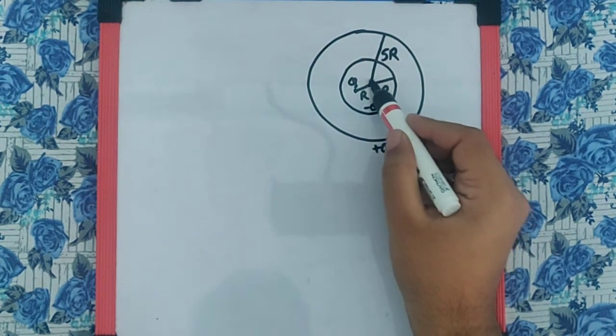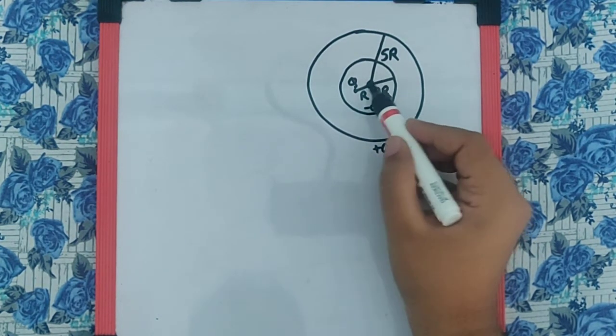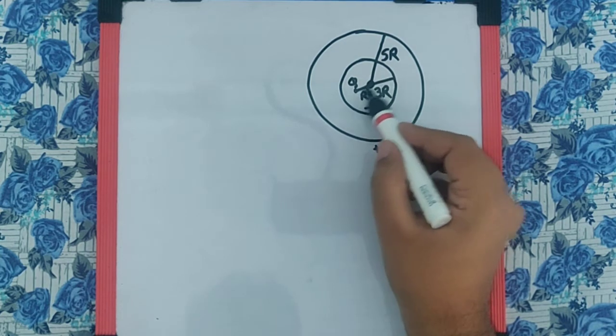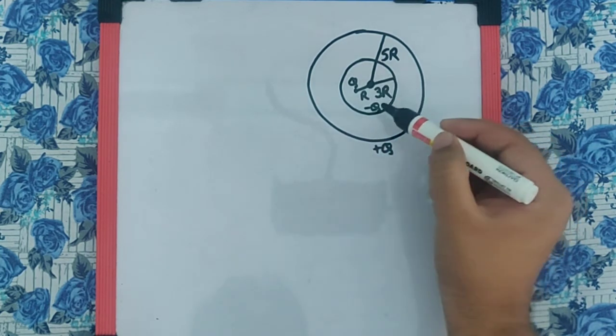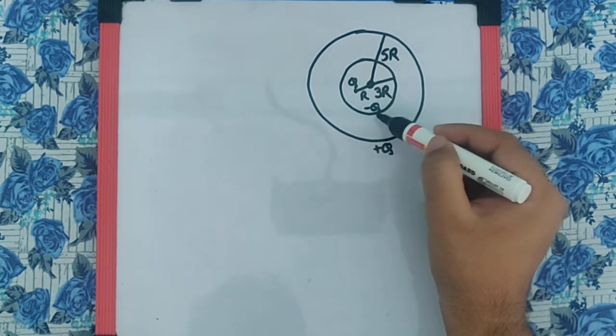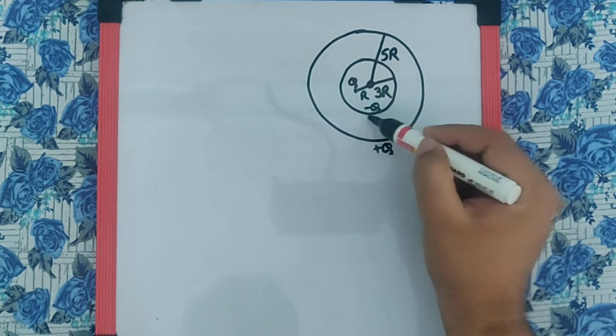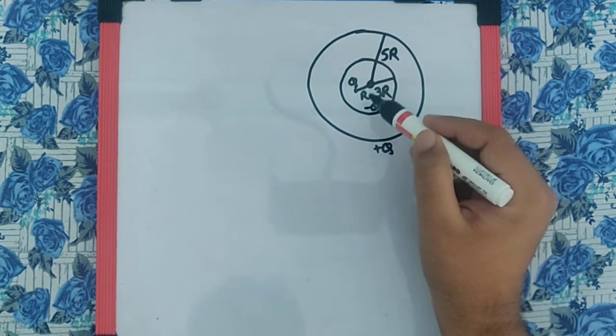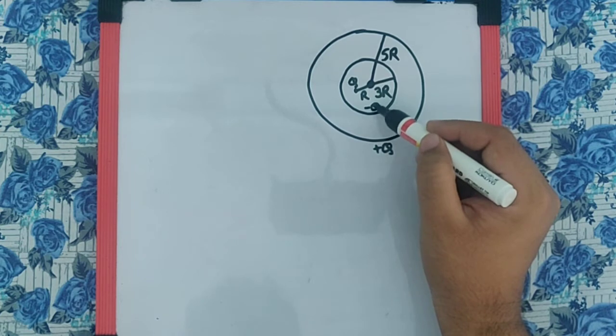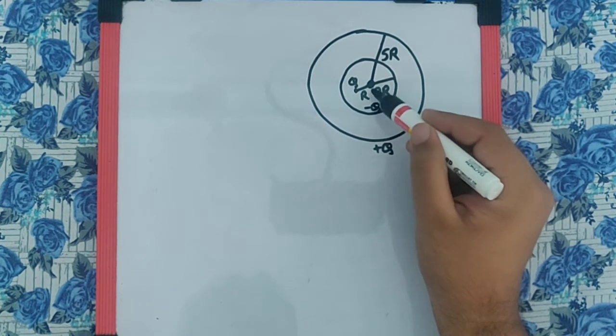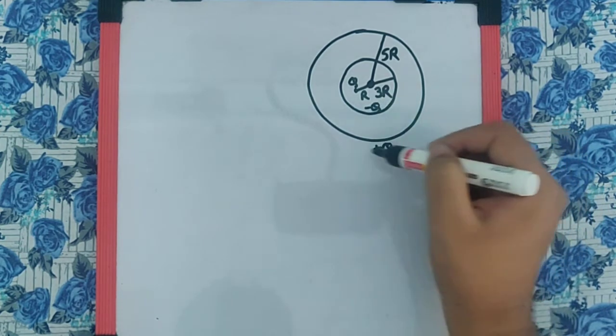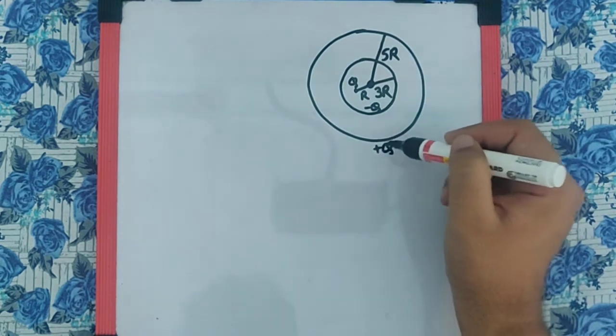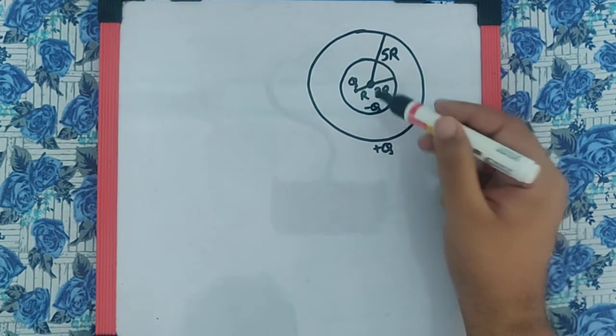Now very clearly we can say that from the center, the point q is at a distance r. The negative q which is spread out throughout this shell, the inner part of the shell, every charge on this is at a distance of 3r. And for this outer spherical shell, I can say the plus q is at a distance 5r.